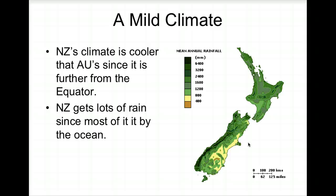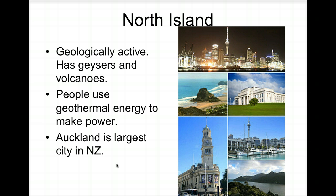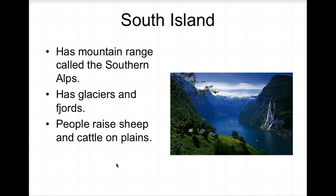New Zealand has a mild but cooler climate than Australia because it's farther from the equator. Being surrounded by ocean, it receives good rainfall. The North Island is geologically active with geysers and volcanoes; people use geothermal energy to generate power, and Auckland is the biggest city there. The South Island has the Southern Alps mountain range with glaciers and fjords — features similar to Scandinavia — and people raise sheep and cattle on its plains.